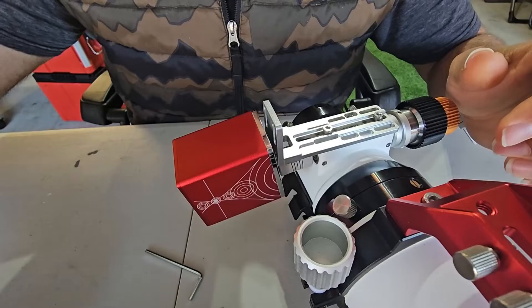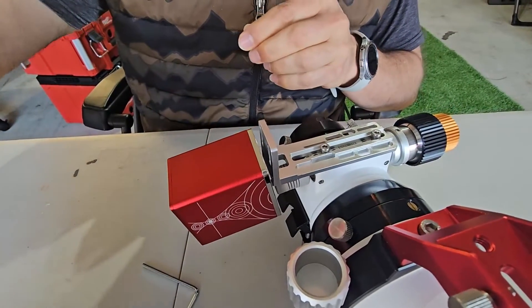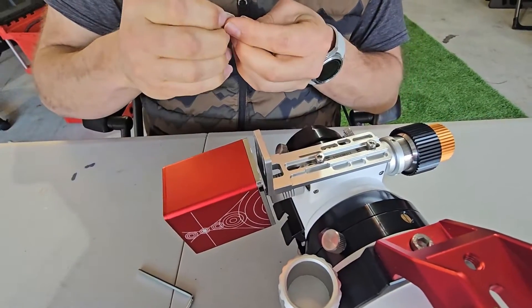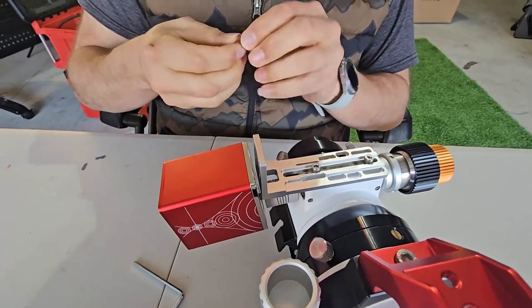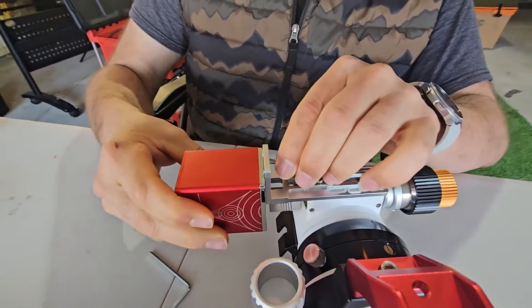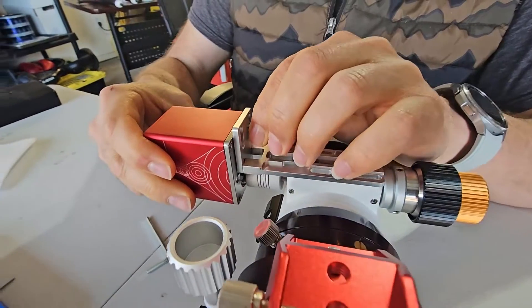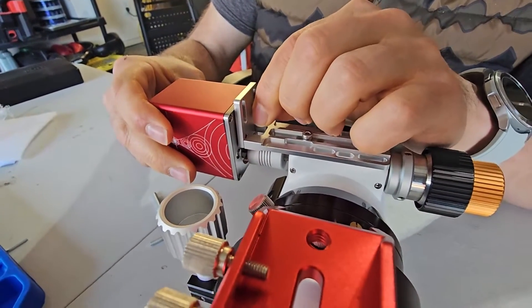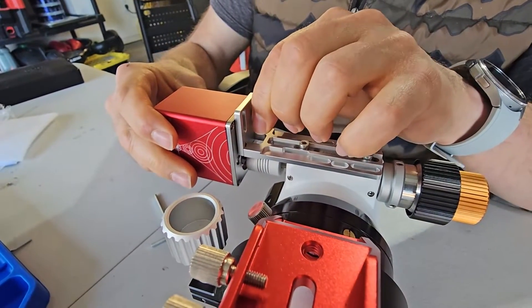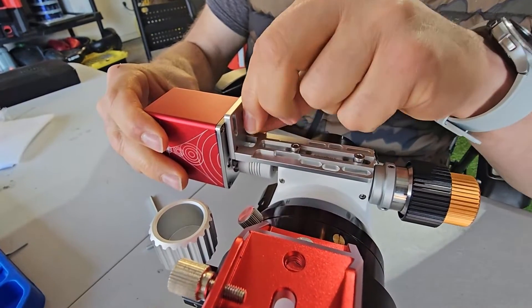And we'll get our other two bolts and washer. And again start those by hand.